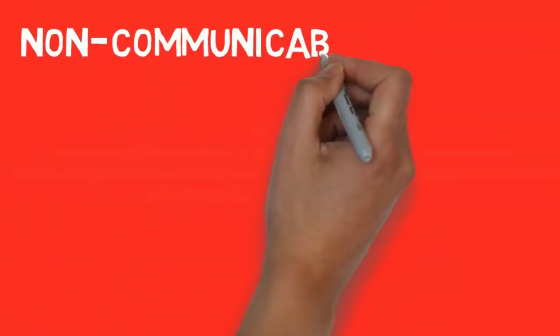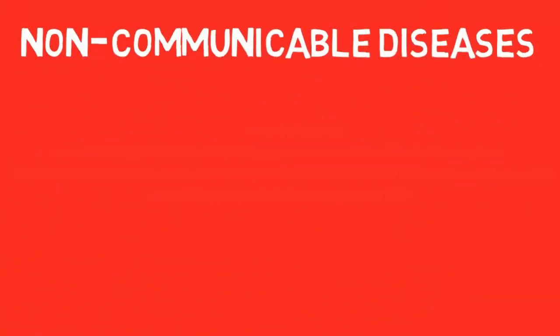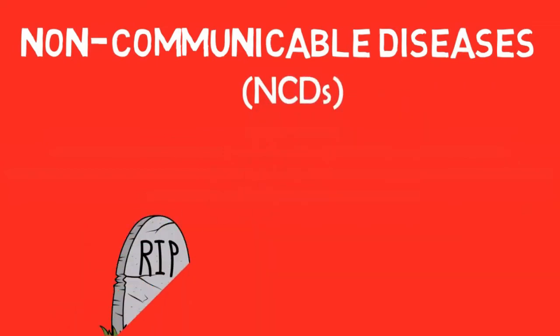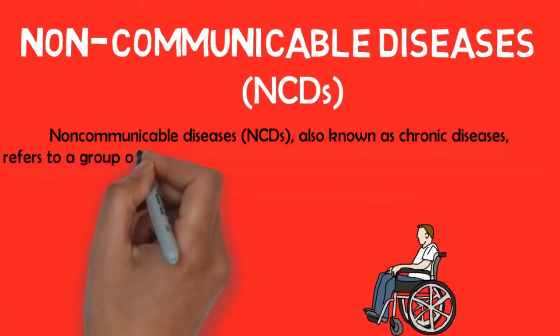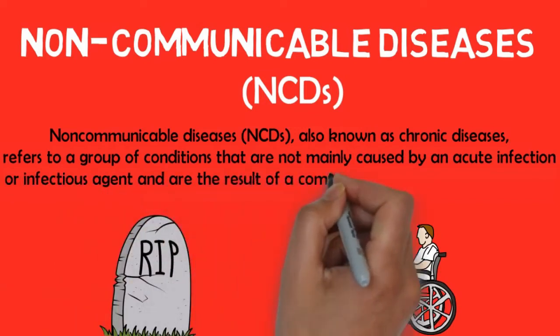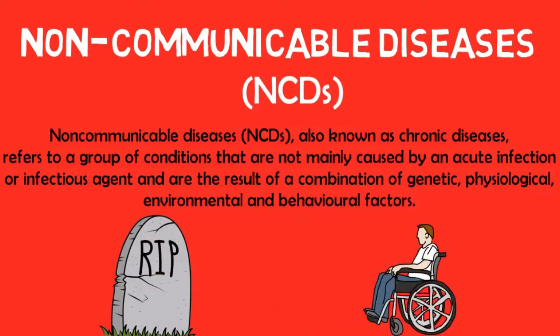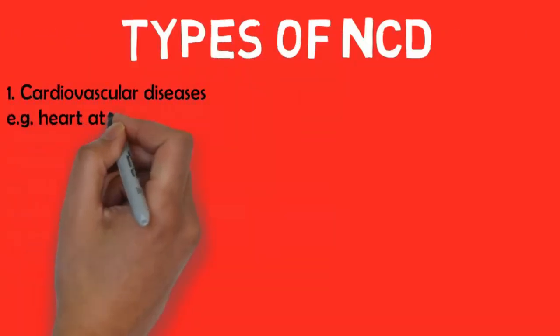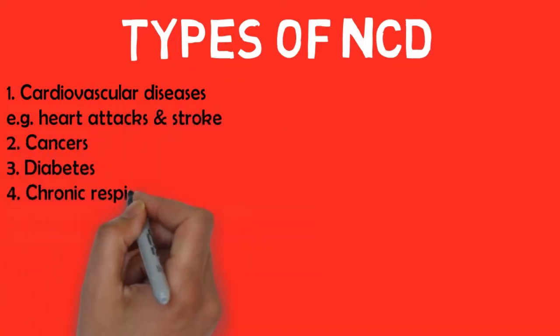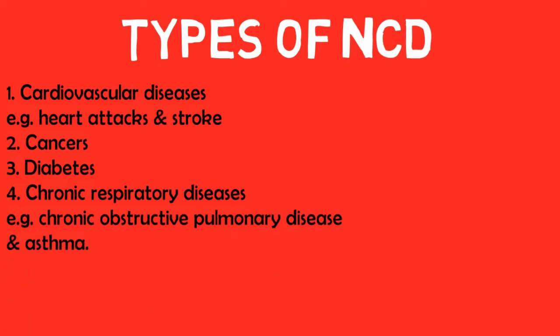Welcome to this video where we're going to be talking about non-communicable diseases — the number one causes of death and disability in the world. Non-communicable diseases, also known as chronic diseases, refer to a group of conditions that are not mainly caused by an acute infection or infectious agent, and are the result of a combination of genetic, physiological, environmental, and behavioral factors. The main types include cardiovascular diseases such as heart attacks and stroke, cancers, diabetes, and chronic respiratory diseases such as chronic obstructive pulmonary disease and asthma.